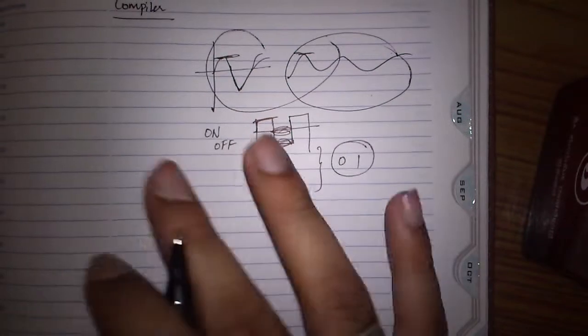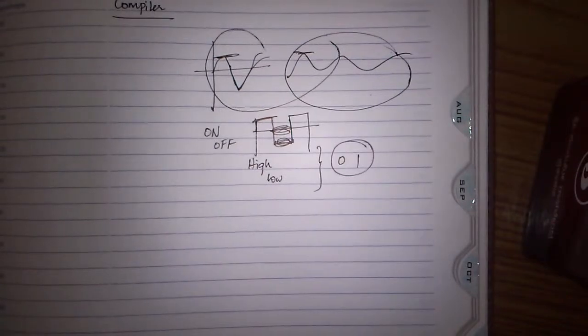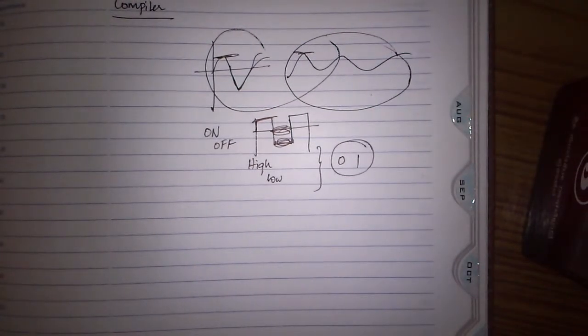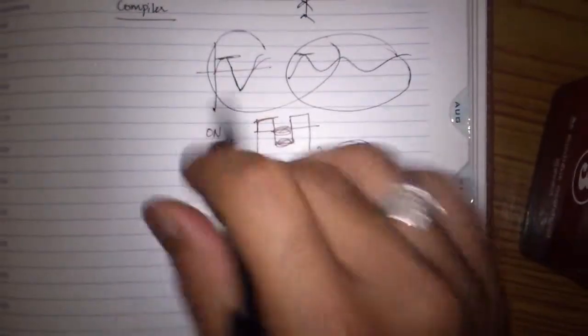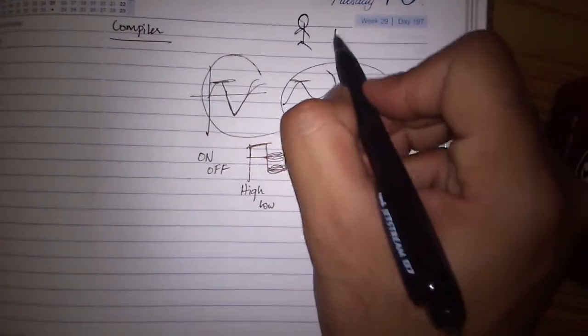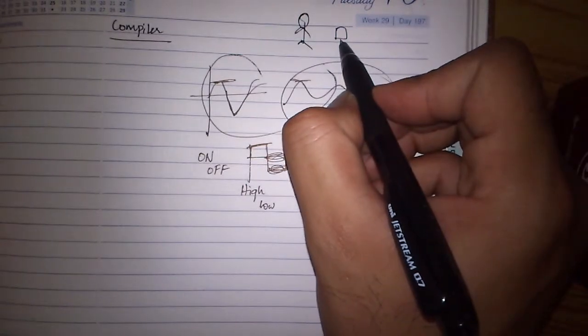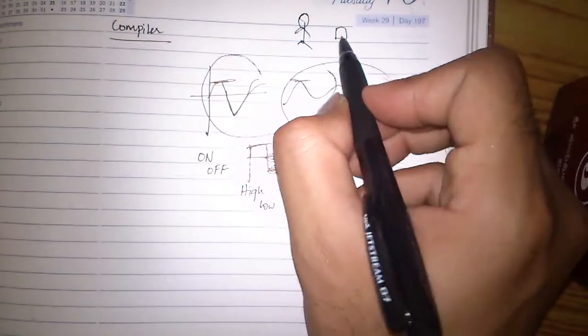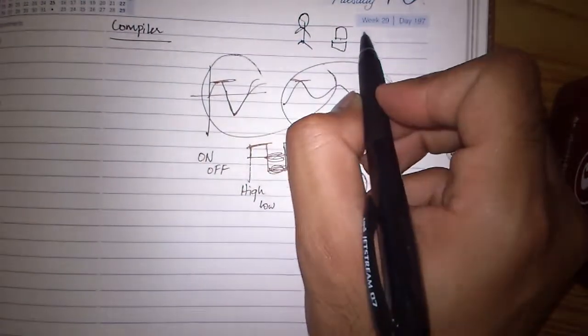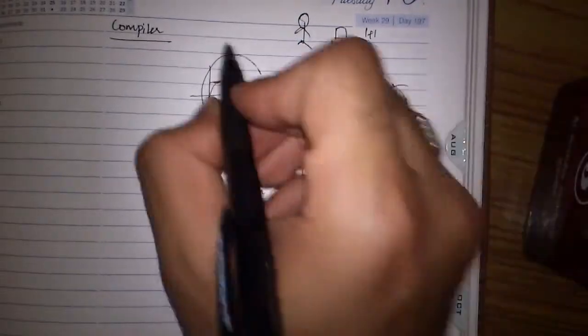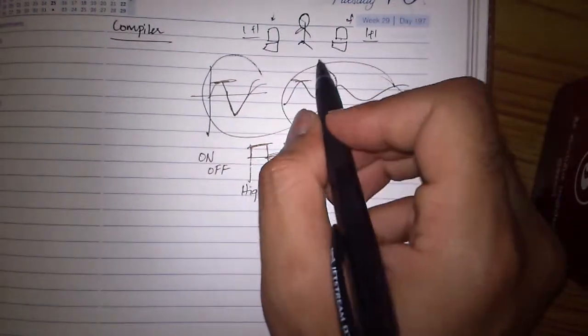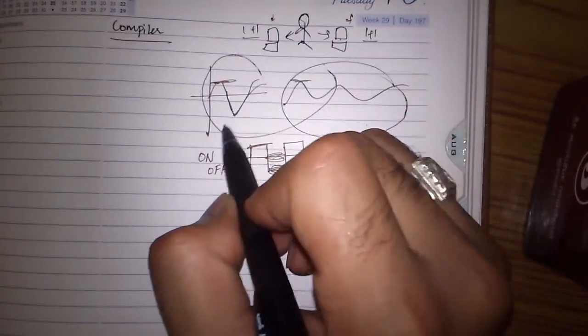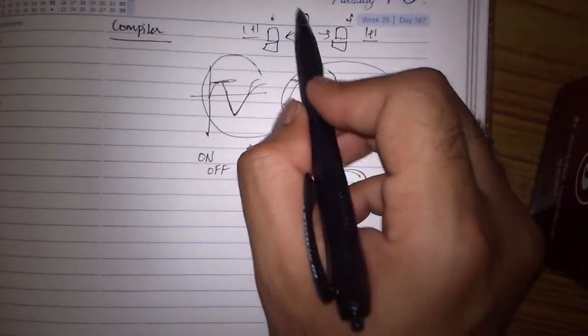For your information, every computer or not computer, you can say every machine, different machines have different machine codes. For a human, a normal human, if he wants to write a program in different machine types, and he wants to write a program for the machine, these two are different machines. He has to write a different code for this computer and different code for this computer. This guy will go mad.